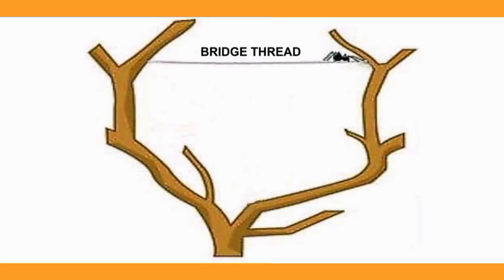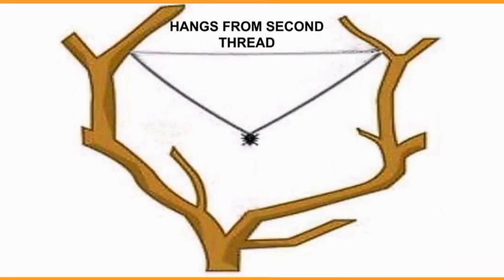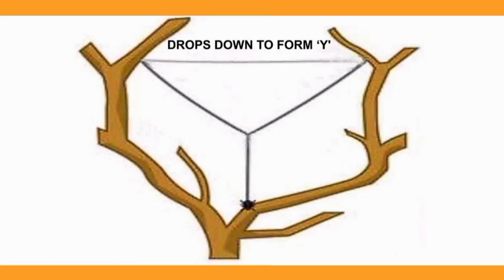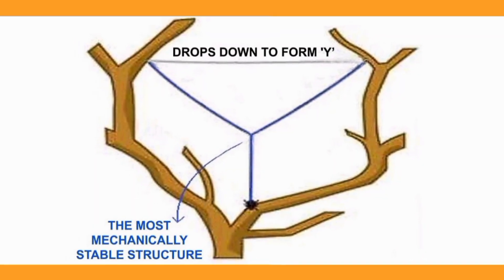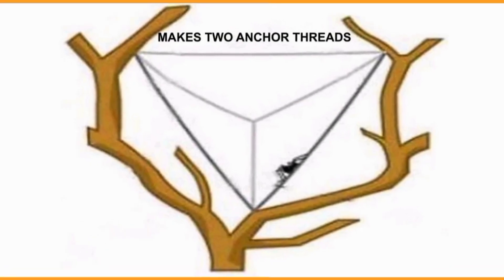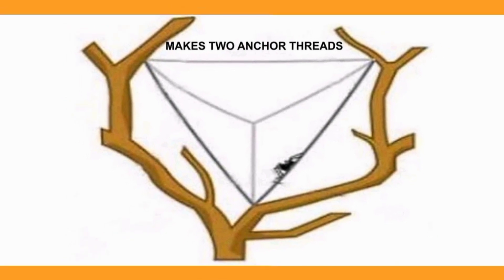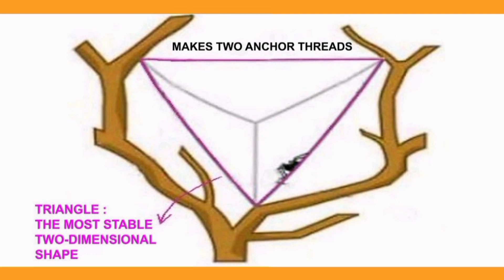First, a spider makes a bridge thread. It makes another thread too. Then it hangs from the second thread to form a Y shape. The Y shape with an angle of 120 degrees in between is claimed to be the most mechanically stable structure. It makes two anchor threads to keep the Y in place. A triangle, which is the most stable two-dimensional shape, is thus formed.